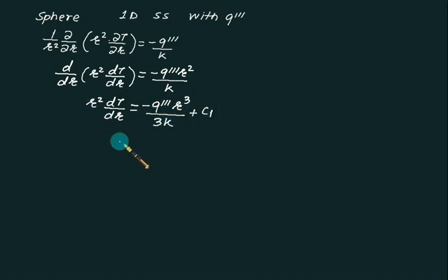To solve it further we will divide by R square. We will get dT by dR equal to minus Q triple dash R by thrice K plus C1 by R square. Now we can integrate one more time to get your temperature distribution.